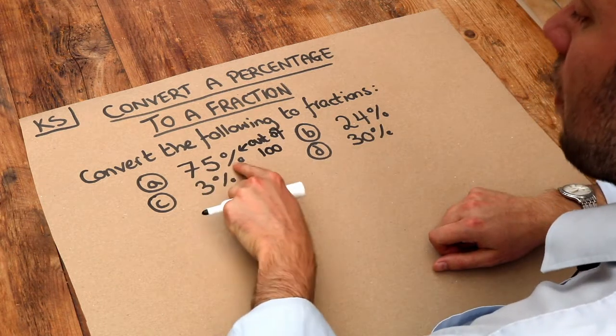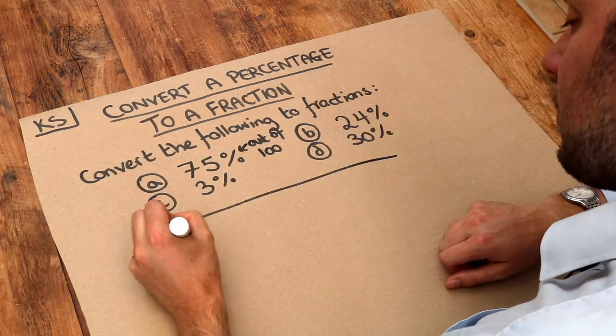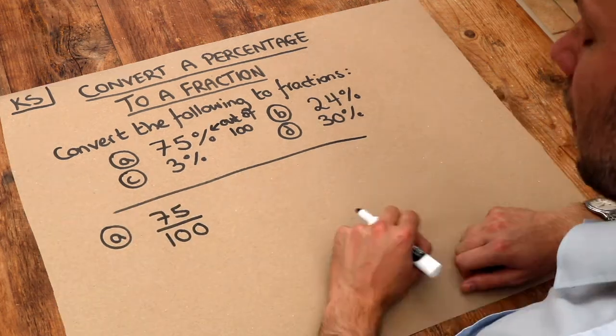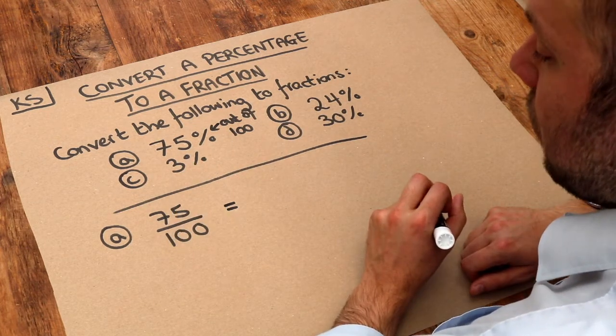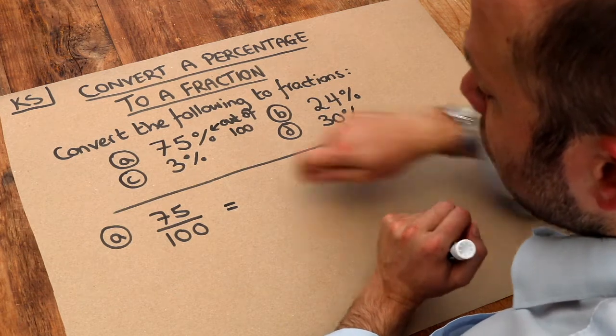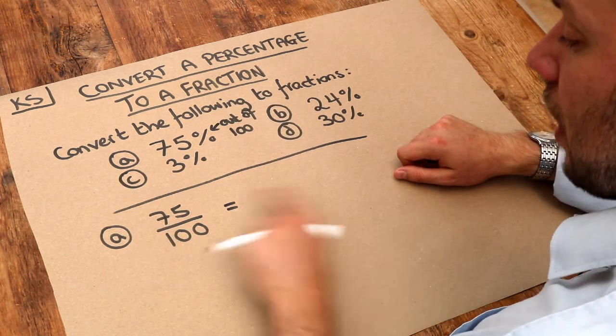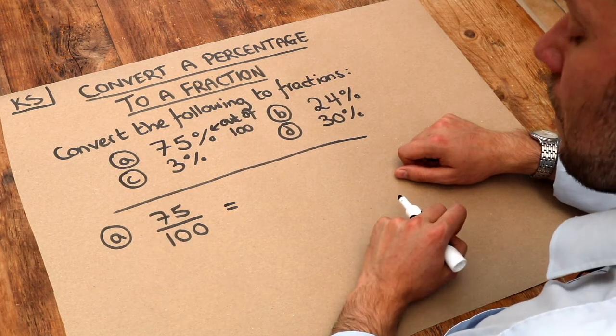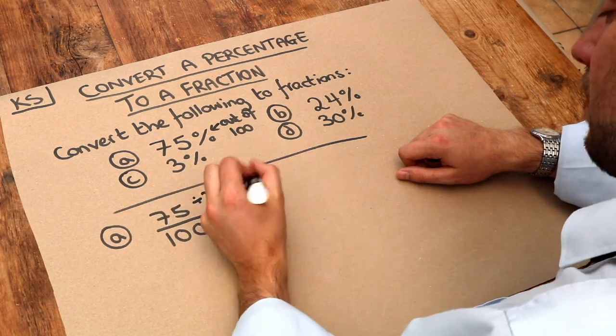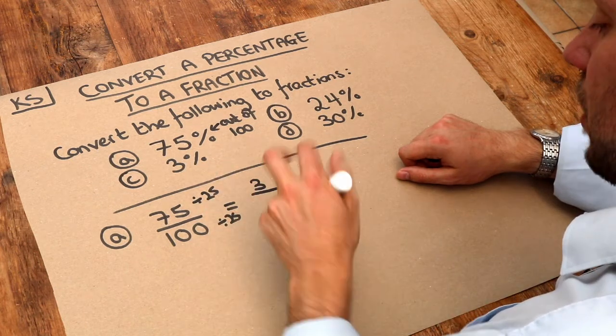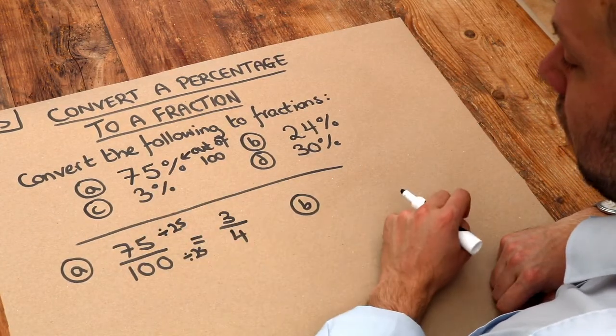If we have 75%, that means we have 75 out of 100. Let's write that down, 75 out of 100 as a fraction. Then all we need to do is convert these fractions to their simplest form. What we need to do is find the biggest factor that's common to 75 and 100. So what number can we divide 75 and 100 by? Well, 25 is a factor of 75 and 25 is also a factor of 100. So if we divide both of these by 25, 75 divided by 25 is 3 and 100 divided by 25 is 4. This is a common percentage that you should remember the fraction for by heart.